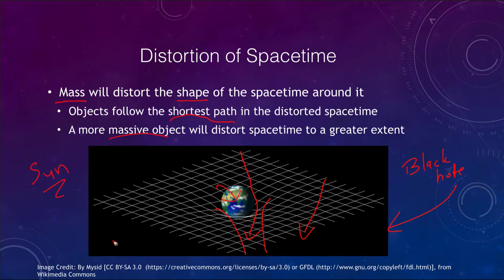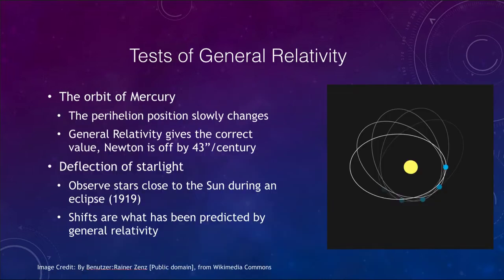So Einstein made some very interesting postulates here. His theory comes up with some very interesting ideas. But what we want to know is, can we test these? So any good scientific theory needs to be able to be tested. And we want to look at some of the tests of general relativity that have been done.